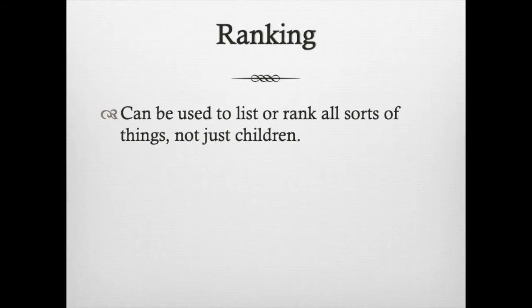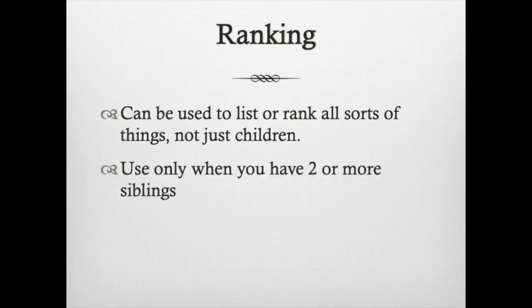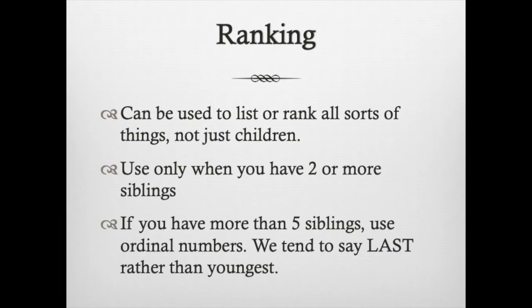You can use this technique to list or rank things with all sorts of objects — it doesn't have to just be children in a family. I would probably only use this for two or more siblings. One textbook says there has to be three things on your list for it to work; the other gives an example where there's only two things, so either one is fine. If you have more than five siblings and you're running out of fingers, you can use 'last' or 'sixth,' or start using ordinal numbers — we'll talk about those shortly. Once you've run out of fingers, you can keep going to talk about the rest of your family.